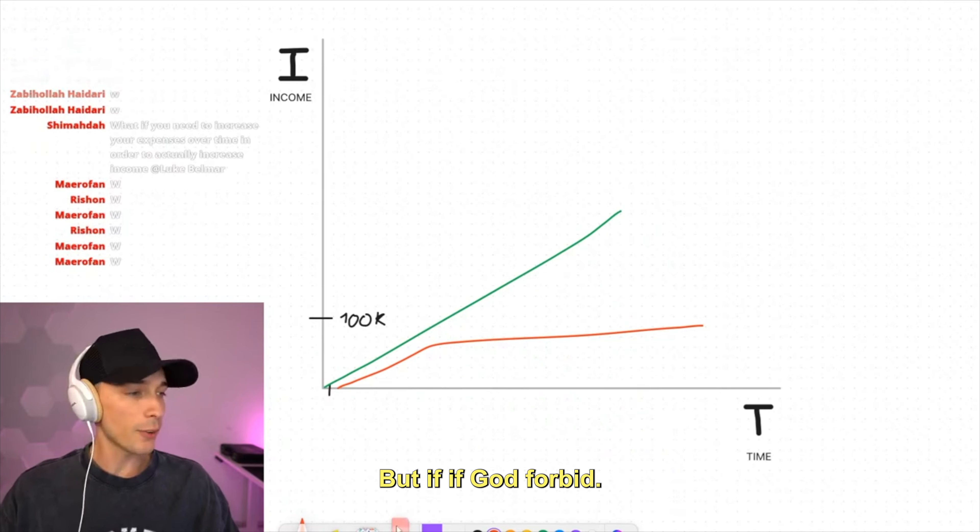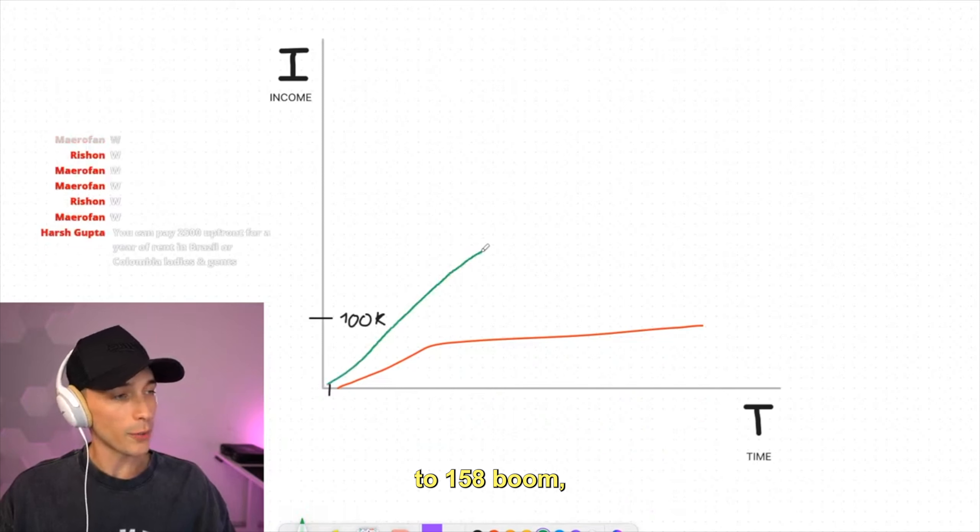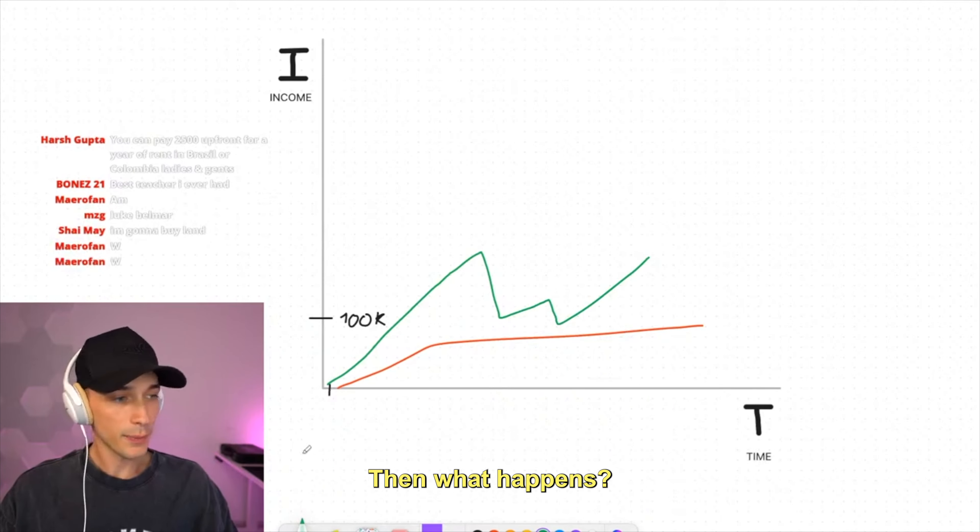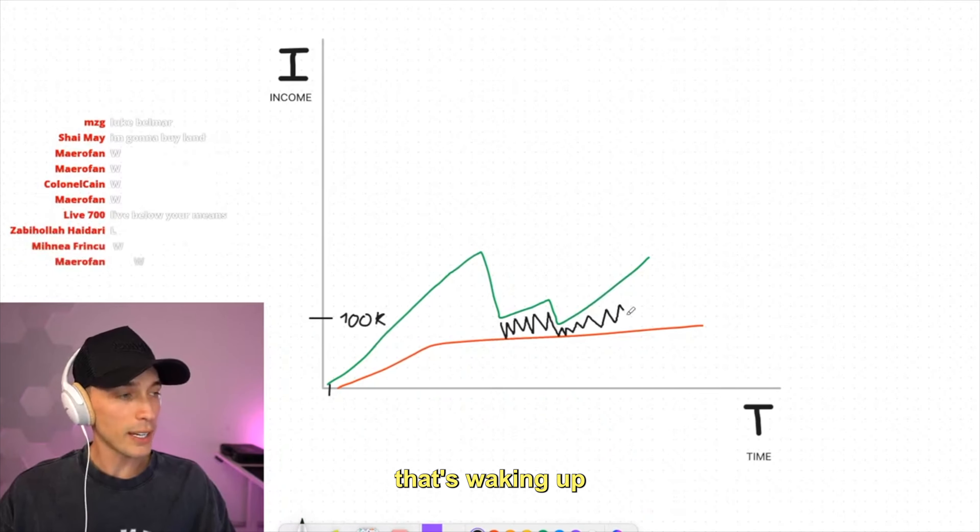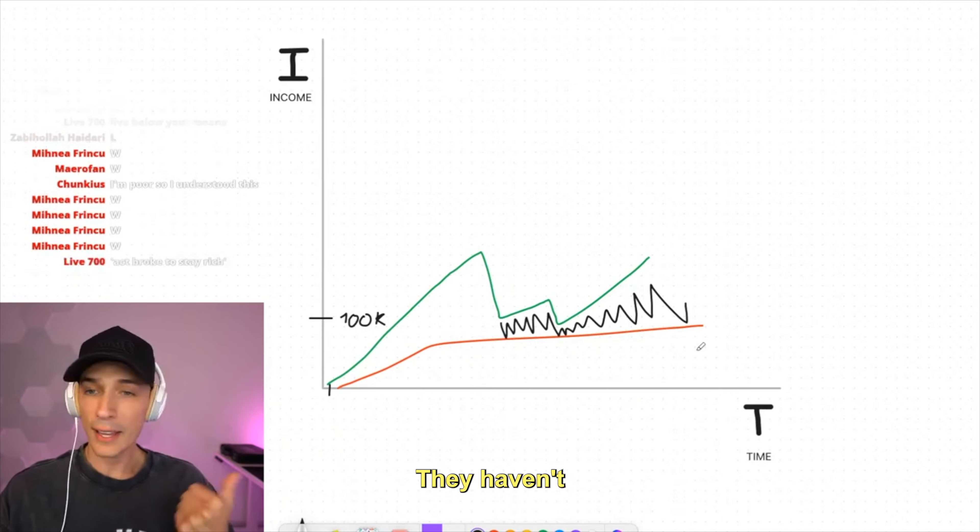And as you can tell, it's drawn in a slight uptrend. What does that mean? That means that your life quality does increase. But if, God forbid, you're in a situation where you're going up to $150k, boom, and your net worth bounces down 30% or your income bounces down 30%, then what happens? Look at all the fucking wiggle room. You're still living with freedom.